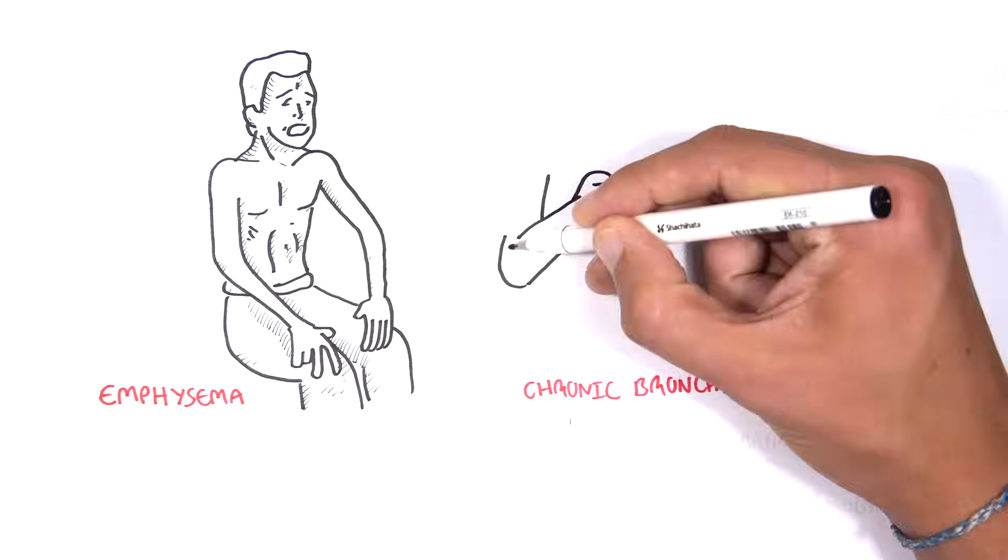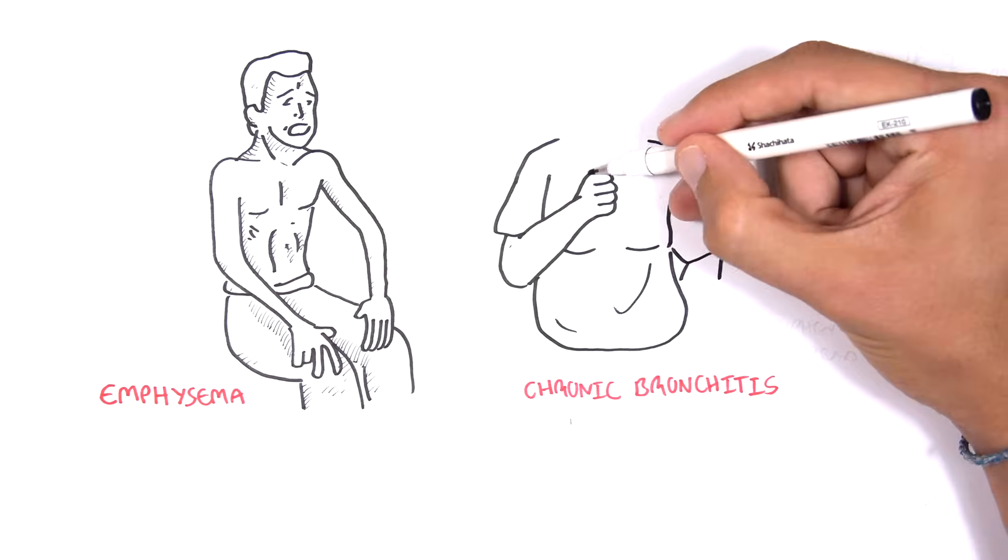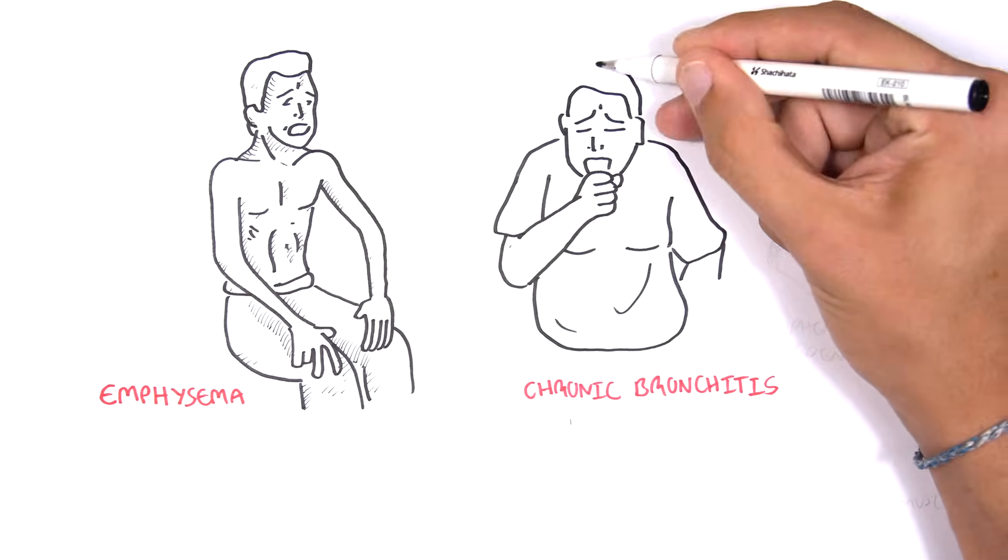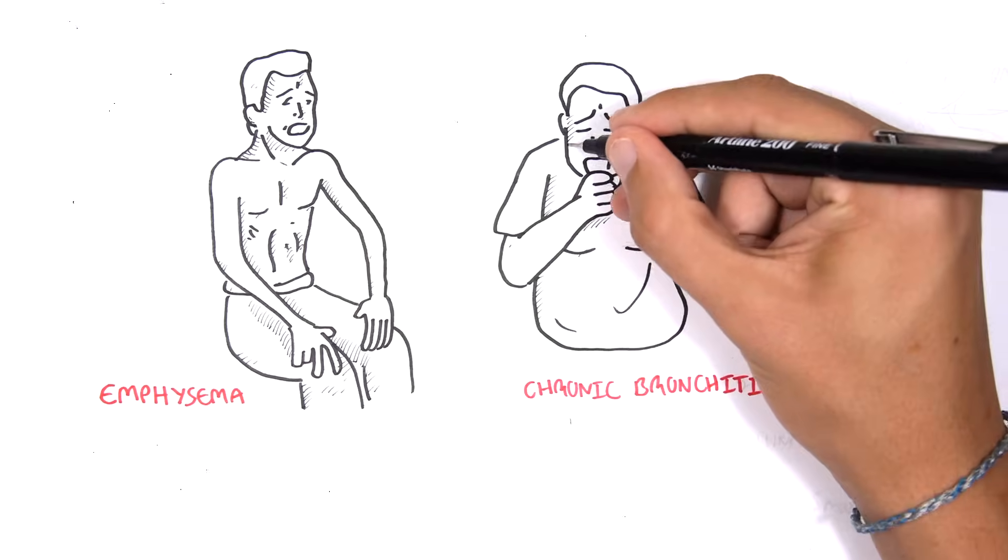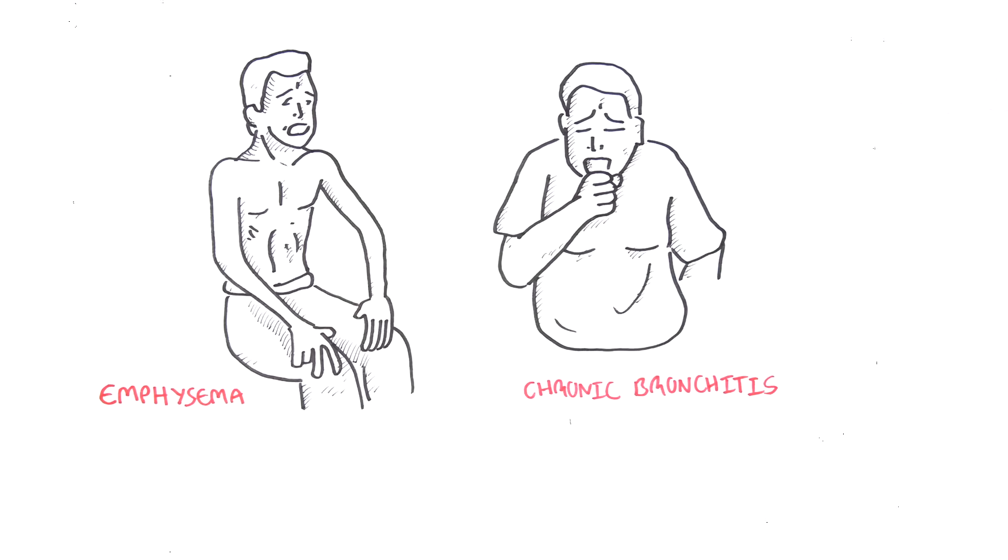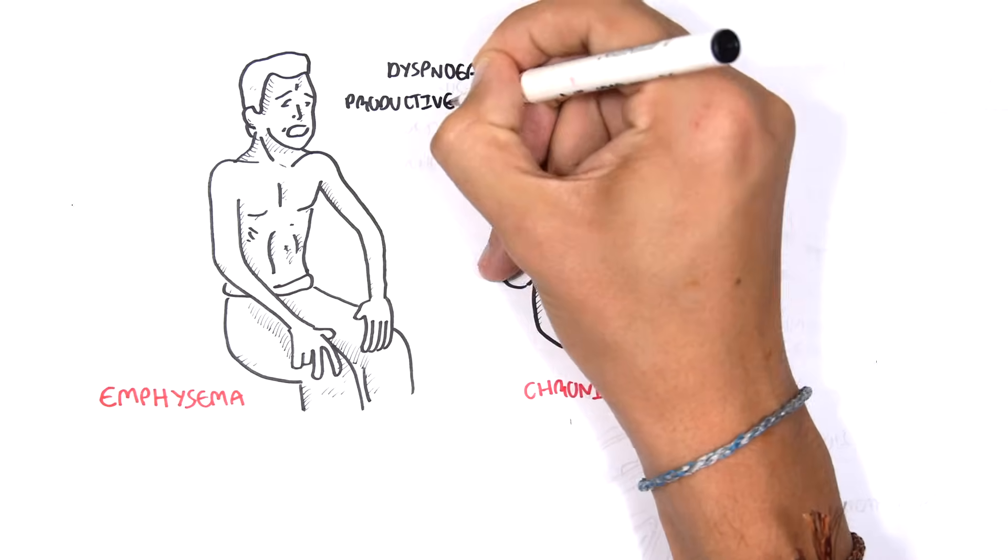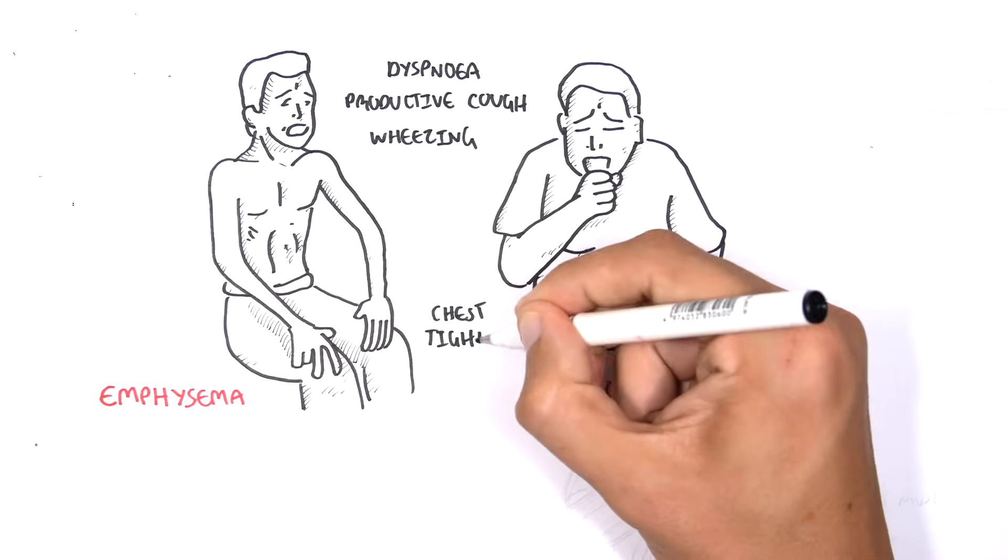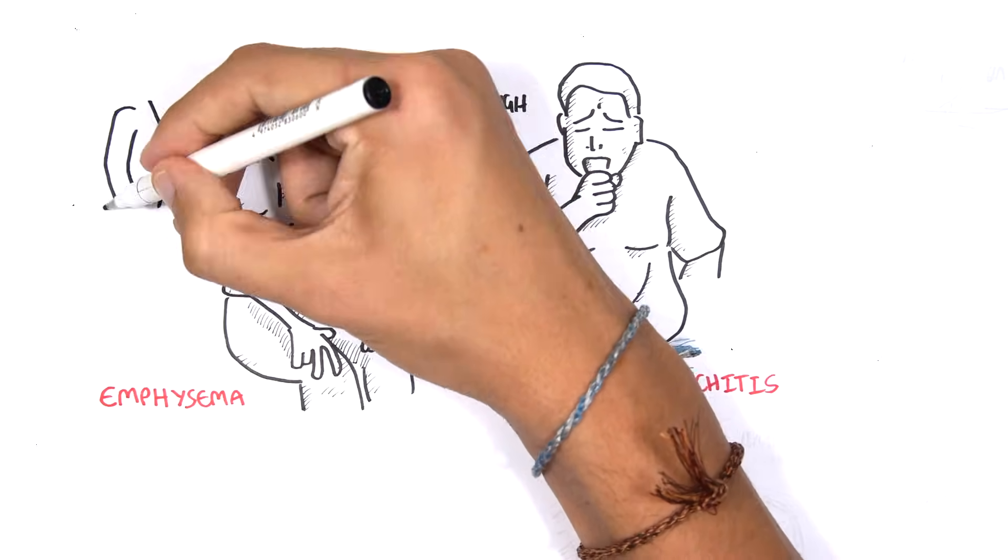Patients with chronic bronchitis are also known as the blue bloaters, because they are usually cyanosed. Some signs and symptoms in emphysema and chronic bronchitis include dyspnea, difficulty breathing, having a productive cough, and chest tightness.